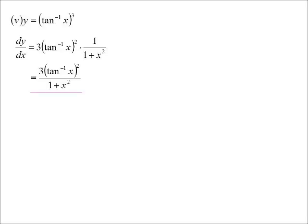Chain rule. Notice it's not tan to the negative 3. Remember I said that negative 1 doesn't represent the power. That's why we have reciprocal ratios. So we're saying the inverse tan function to the power of 3. We would not write that as tan to the negative 3. Bring down the power, 3. Lower the power, 2. Differentiate the inside. 1 on 1 plus x squared. So tidy that one up. There's our answer.